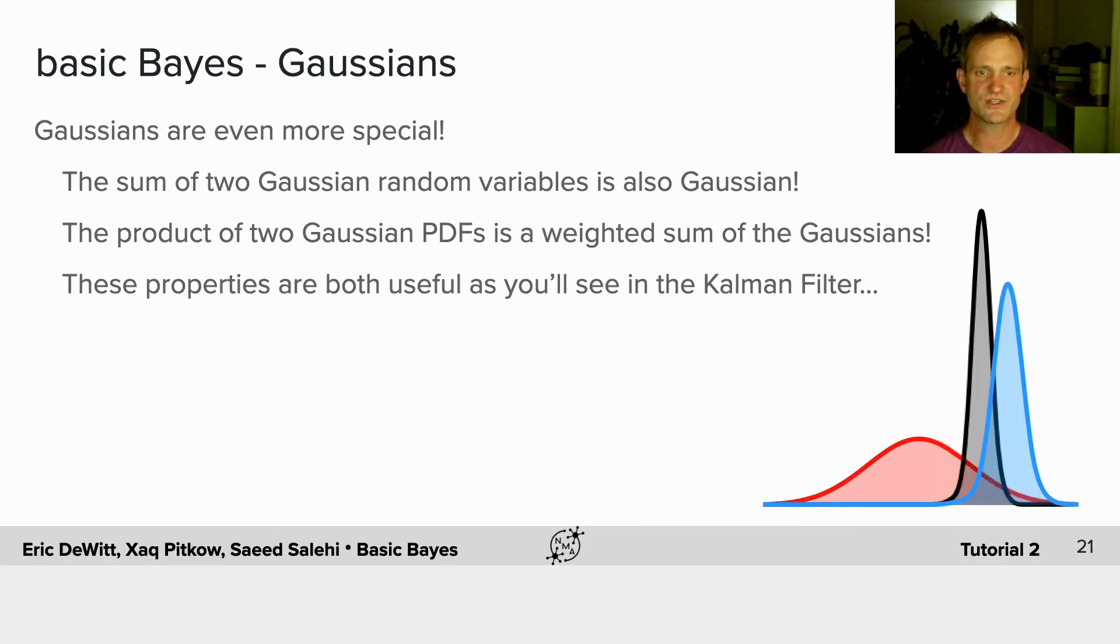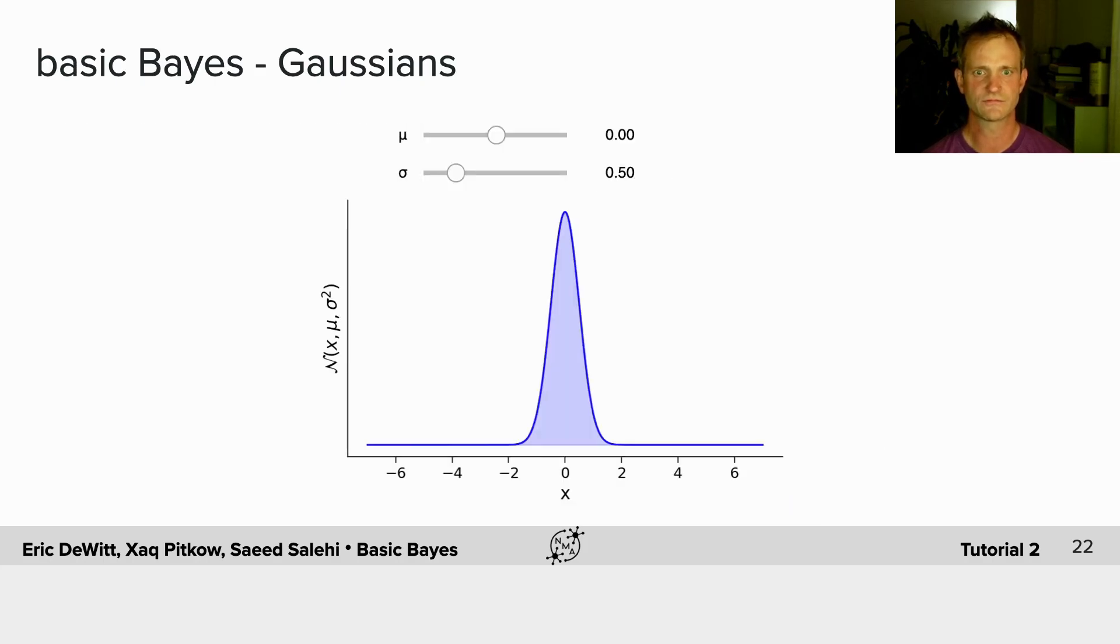Gaussians are even more special. The sum of two Gaussian random variables is also Gaussian. The product of two Gaussian PDFs is a weighted sum of Gaussians, and these properties are both useful, as you'll see in the Kalman filter. You're going to use this interactive widget to explore the basic parameters of the Gaussian distribution.